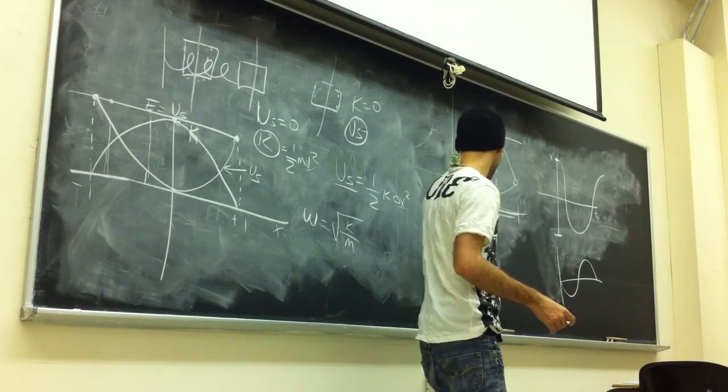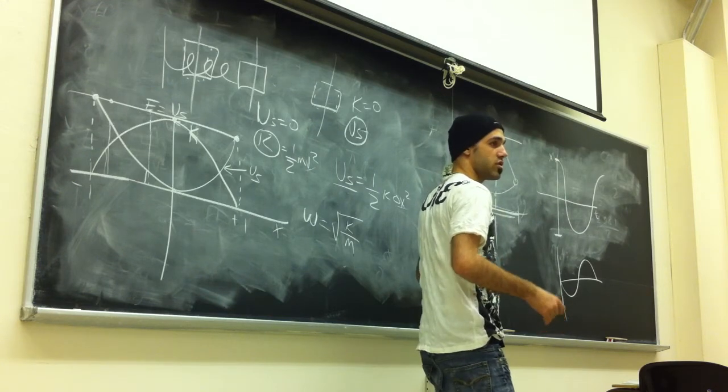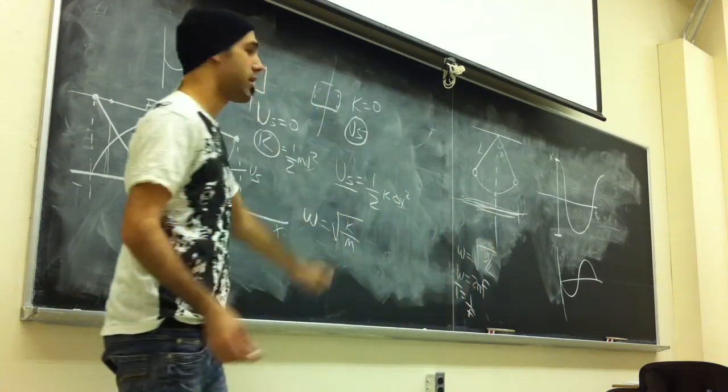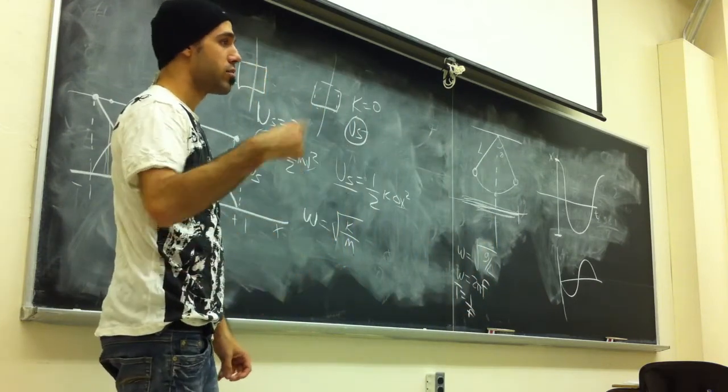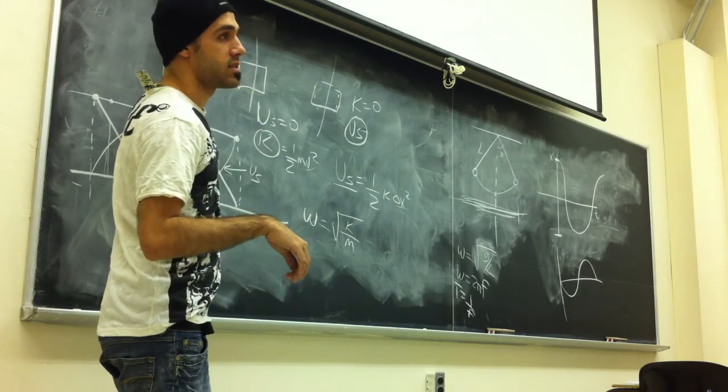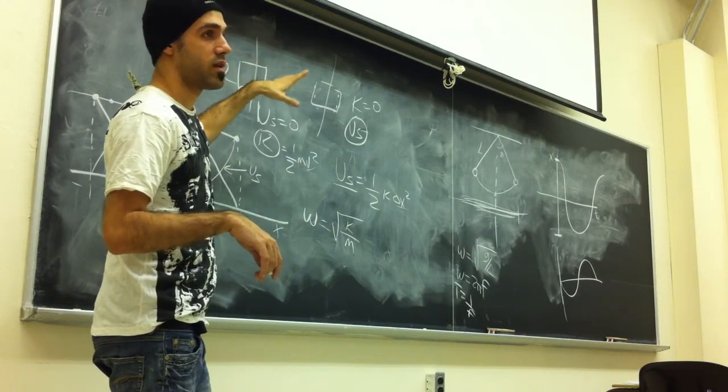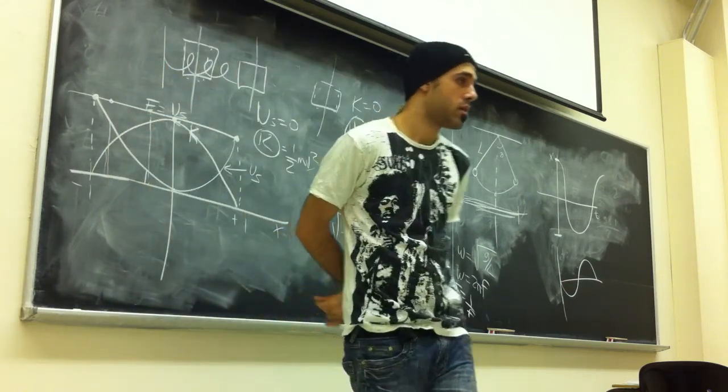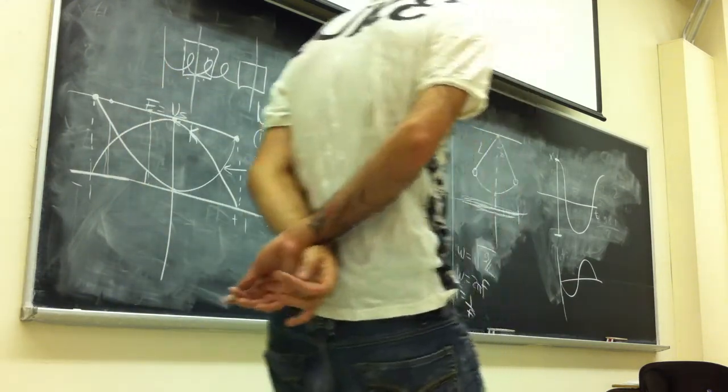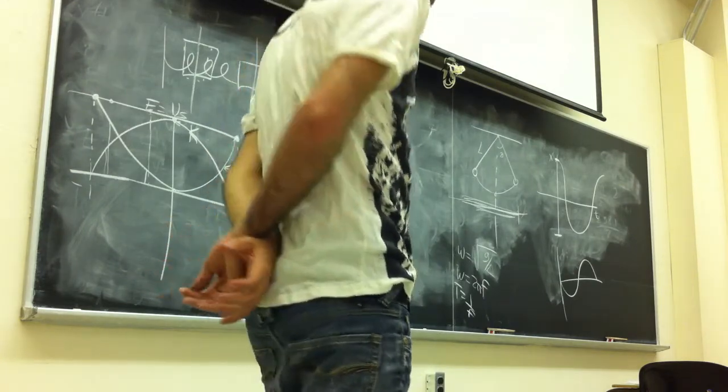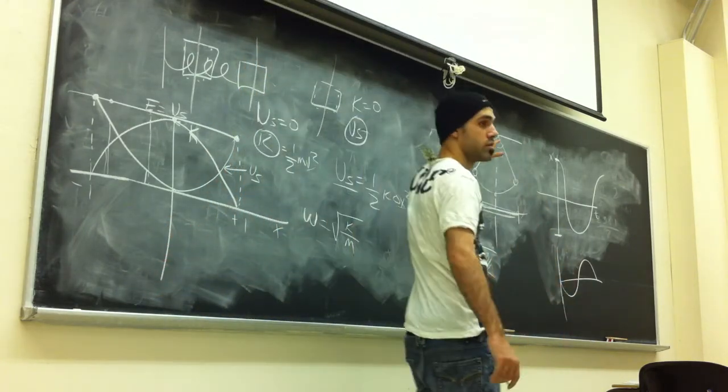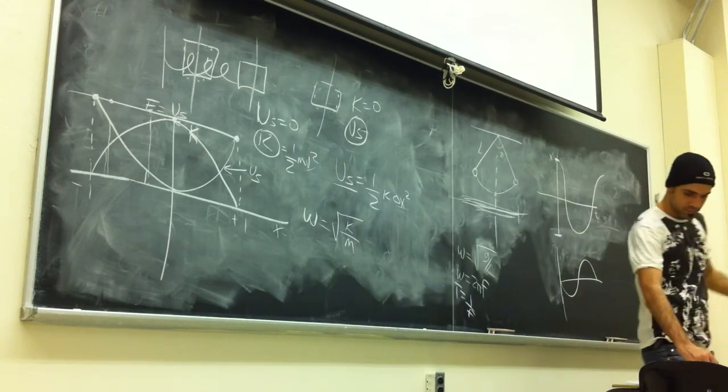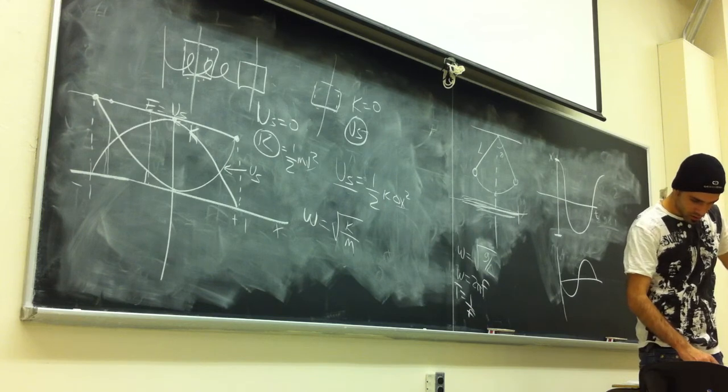In this case, if you have a pendulum, your initial angular frequency is given by g over l. If you have a spring, it's k over m. From that, you can apply that into your equations for x equals a cos omega t plus phi.